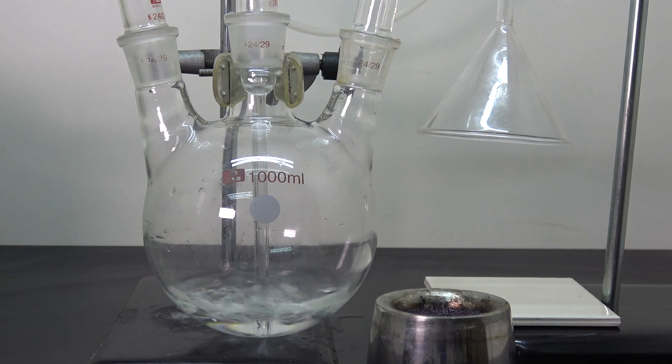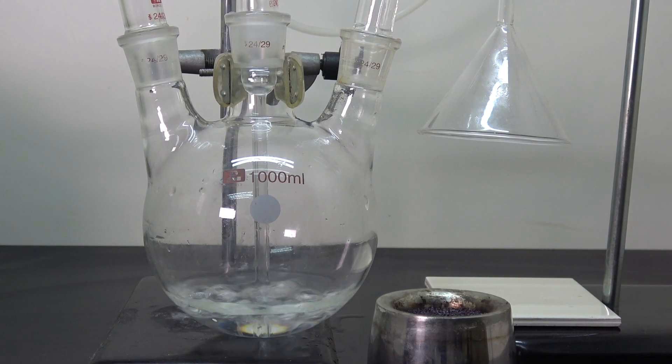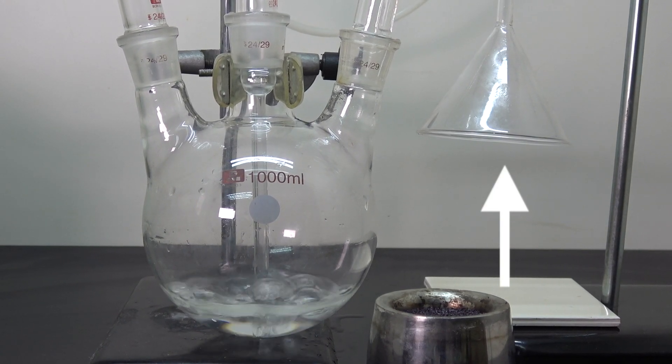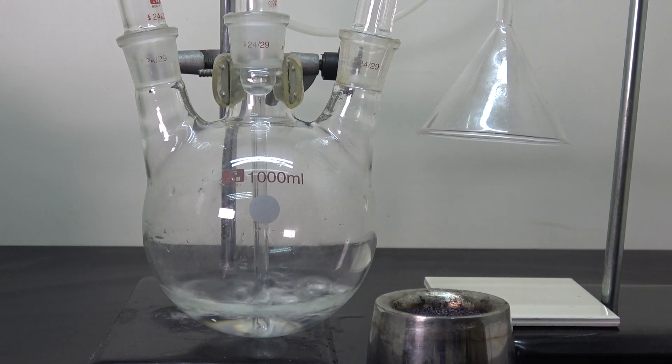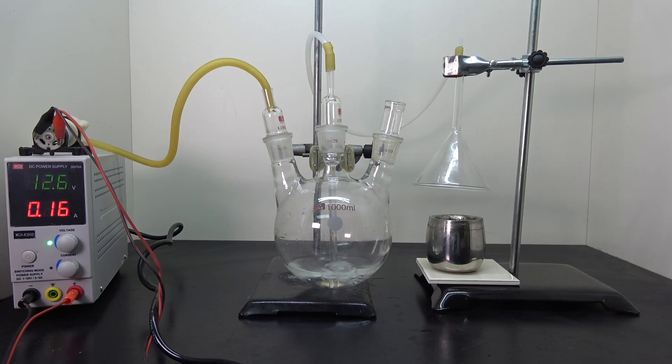What this setup does is create a low pressure zone inside of the flask. To compensate the differences in pressure, the air outside of the flask will rush into this funnel here, along with the smoke that will be generated in this reaction, and traveling through the pipe, and end up in the flask.